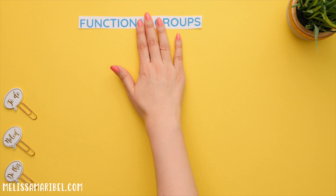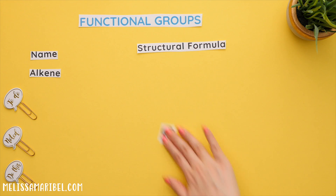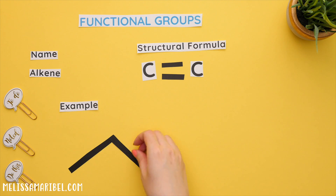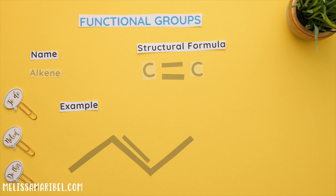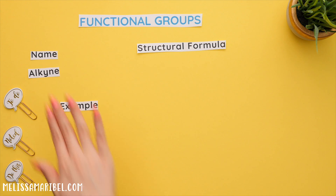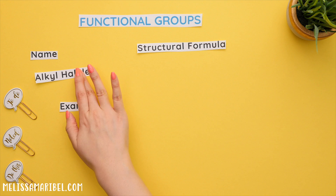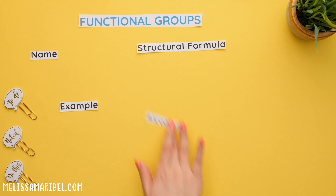Let's go over the most common functional groups. First is an alkene — this is the structural formula and here's an example. As you can see, an alkene refers to the double bond. Next is an alkyne, which refers to a triple bond. On to an alkyl halide — alkyl meaning it consists of carbon and hydrogen, and halide meaning it's a halogen.